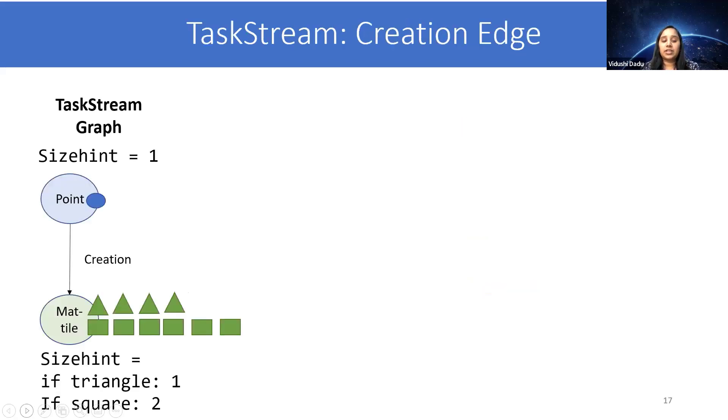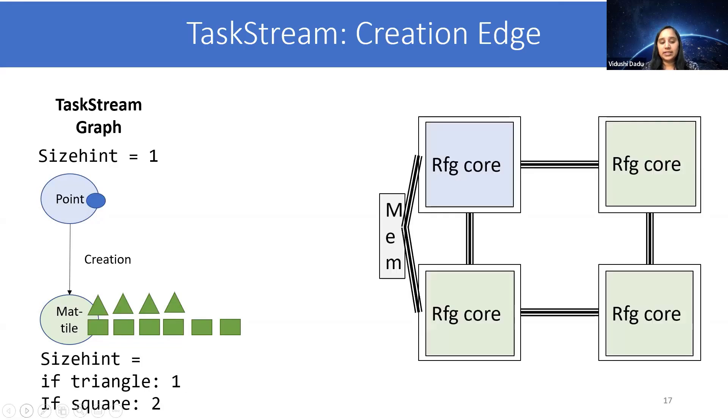So let's start with creation. Here, we extract the part of the TaskStream graph of Cholesky, where we look at point to matrix task. The different instances of matrix task can be a variable size. Here we introduce an annotation of size hint that can specify the relative size of a task instance. So for a point, it will always be one. So it's a constant, while for matrix, it can be a triangle or a square, giving it value of 1 and 2. So without any size hint, all these task instances would be dealt with similarly. And then they could be scheduled so that some cores get too much work like three squares, while other cores can get much lesser work. However, if the scheduler is trying to optimize for the total size of the work that each core gets, then the distribution would look something like this, where the cores with more tasks would get more triangles so that the total amount of work is similar.